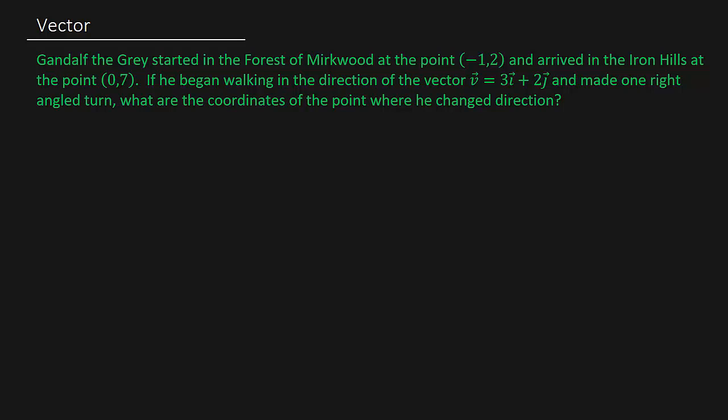It says Gandalf the Grey started in the Forest of Mirkwood at the point (-1, 2) and arrived in the Iron Hills at the point (0, 7). If he began walking in the direction of the vector 3i + 2j and made one right angle turn, what are the coordinates of the point where he changed direction?